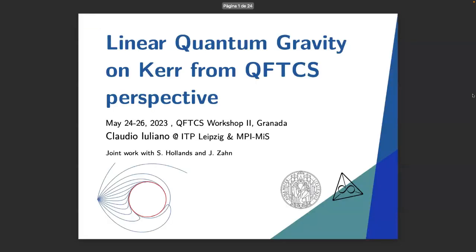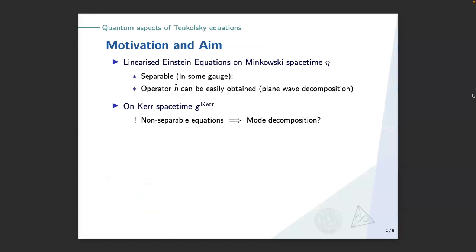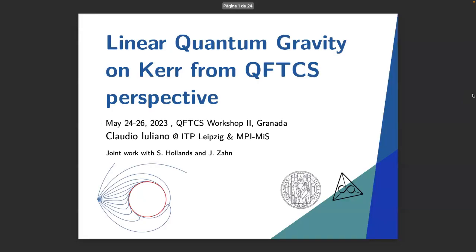But when you move to a curved spacetime — it doesn't matter how it looks — it's a mess, it's pretty ugly. The equations are not separable, which means it's unclear how to get a mode decomposition, and when the decomposition is unclear it's also unclear how to define creation and annihilation operators. So we really want to improve the situation here — but why do we want to do that?